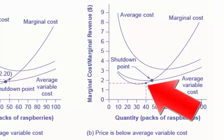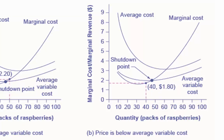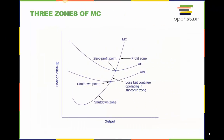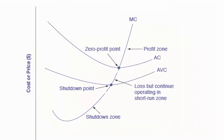If the firm shuts down, it must pay only its fixed cost of $62. Shutting down is preferable to selling at a price of $1.80 per pack. The marginal cost curve can be divided into three zones, based on where it is crossed by the average cost and the average variable cost curve.